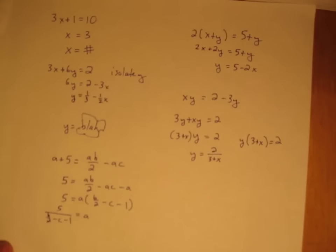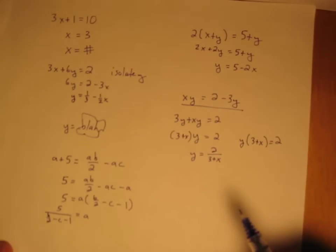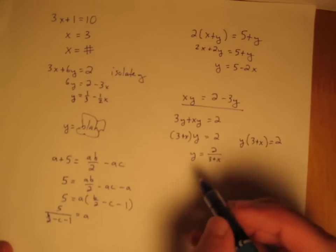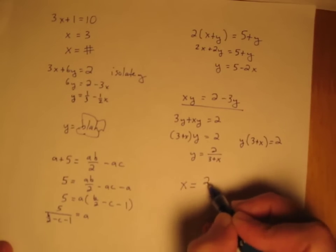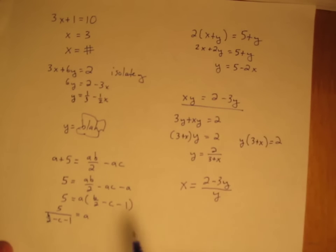One last thing before we go, we can also solve these equations for other variables. So take this one here. Instead of solving for y, we could have solved for x. In this case, that's pretty easy. x would just equal 2 minus 3y over y, dividing both sides by y.